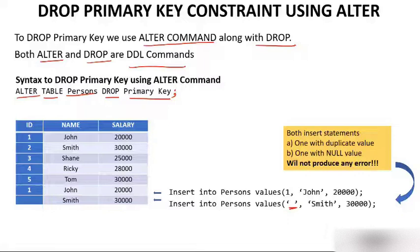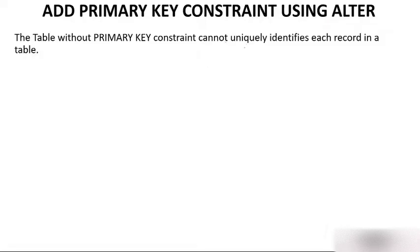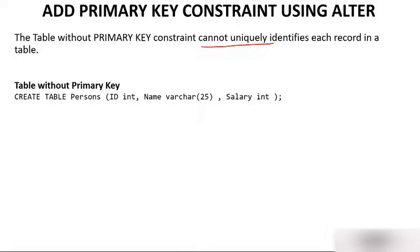Your job was to insert null values and duplicate values, and now you are able to do so because you have dropped the primary key. Now a different question: what if you want to add a primary key? That is, a table is not having a primary key — it is accepting null values and duplicate values — and you don't want that. In that case, you can add a primary key to an already created table without creating a new table.